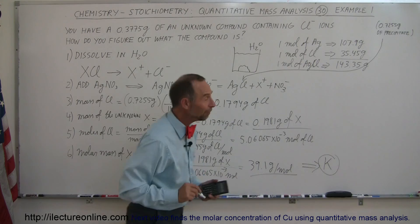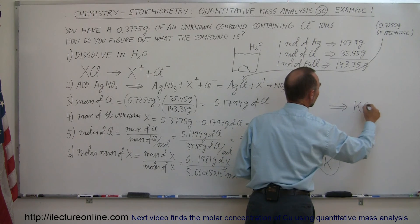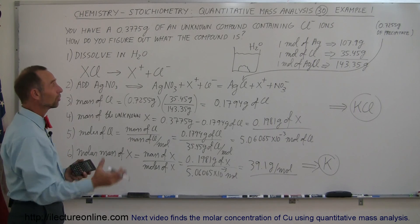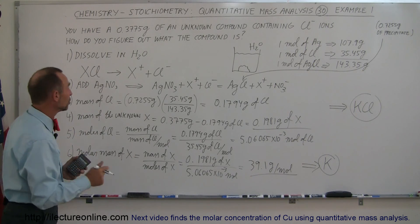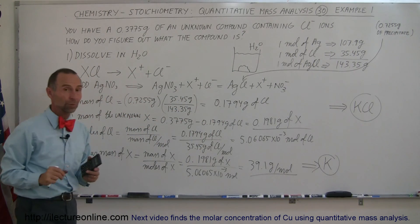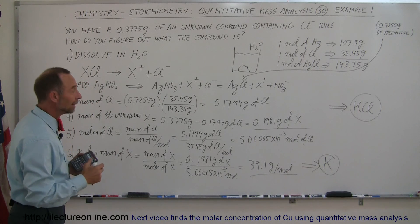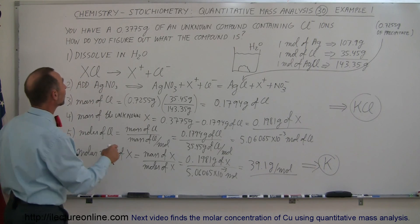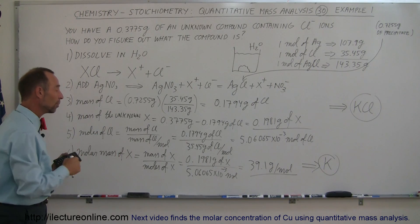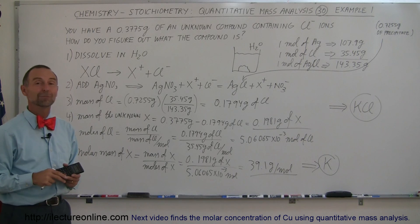There is one element on the periodic table with a molar mass of just about 39.1 grams per mole, and it is potassium. So that means the unknown compound, which had chlorine in it, had to be potassium chloride — and that's the unknown sample. You dissolve it in water, add silver nitrate to precipitate out silver chloride, find how much chlorine you had, determine how many moles of chlorine — equal to moles of unknown — divide mass by moles to get the molar mass, look it up, and it's potassium. That's how we do it.